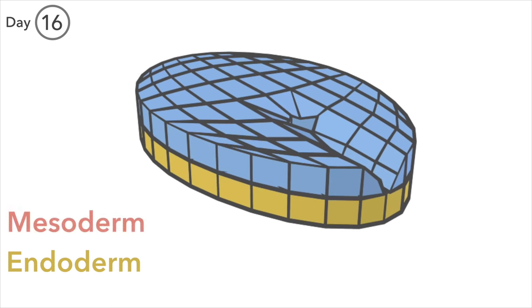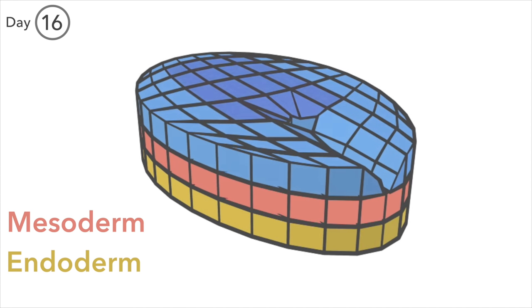We have the germ layer known as mesoderm, and these cells push in between the layers of the former bilaminar disc. Some mesoderm spreads to the edges to meet the extraembryonic mesoderm. So these are now continuous.